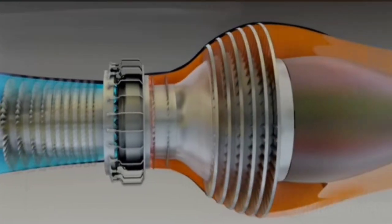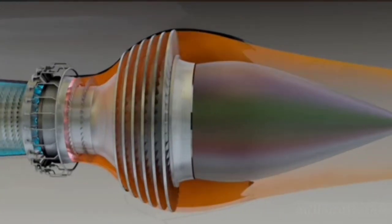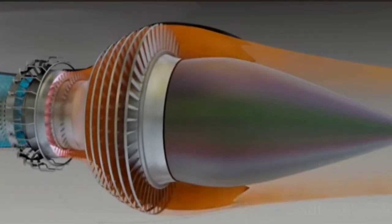Turbine fins get extremely hot. Some air from the compressor is diverted for cooling, and special coatings are used to keep temperatures down.